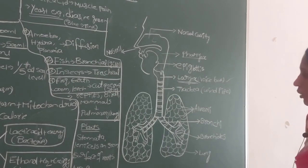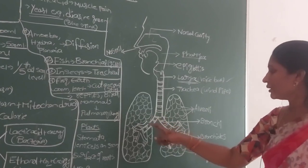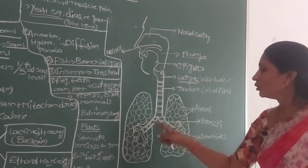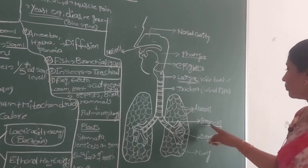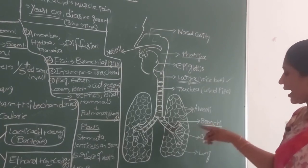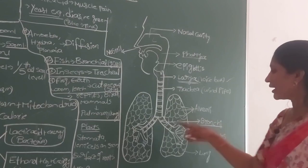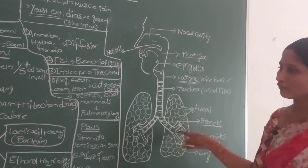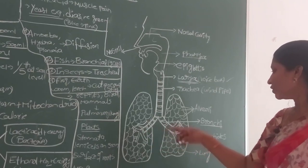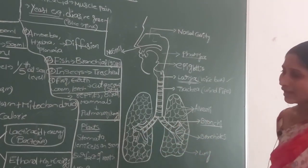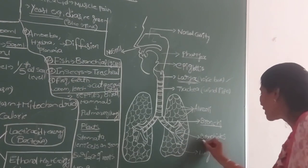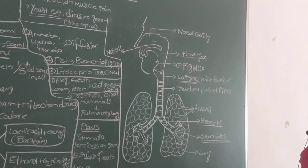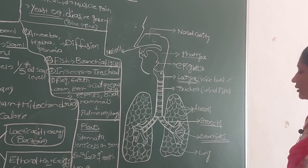When the trachea enters the lung region, it divides into two separate structures called bronchi (singular: bronchus). These two bronchi lead into the two different lungs. Once inside the lungs, each bronchus divides further into smaller branches called bronchioles.